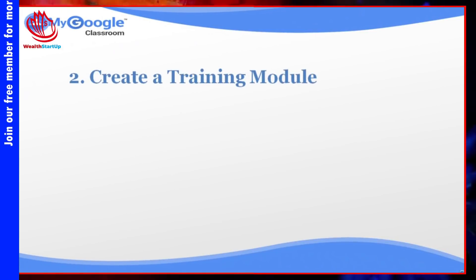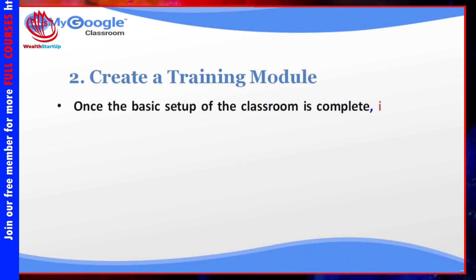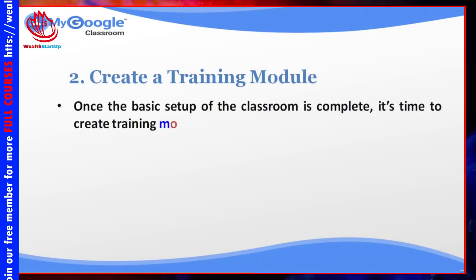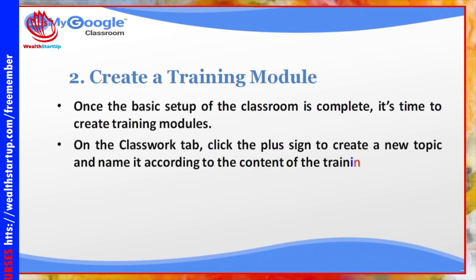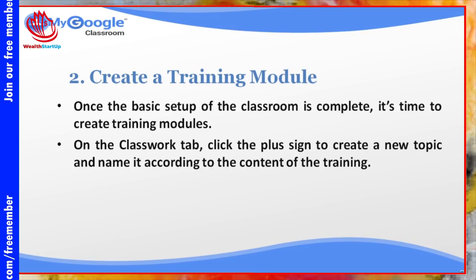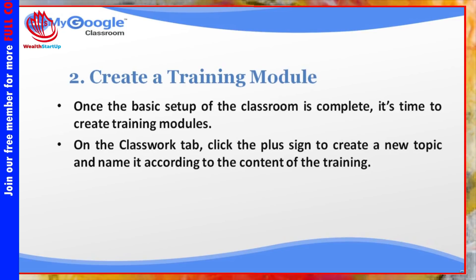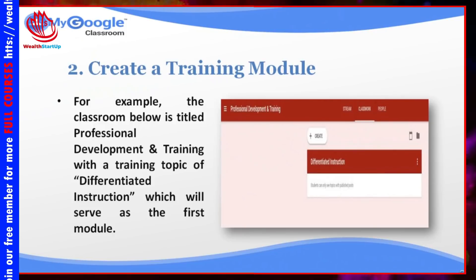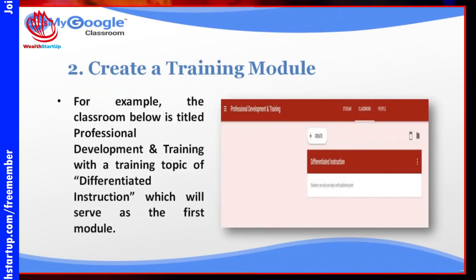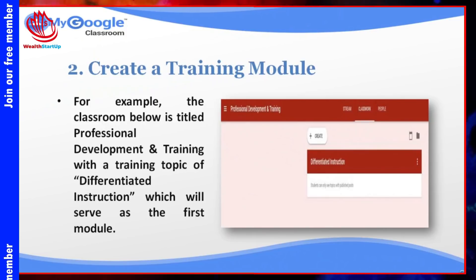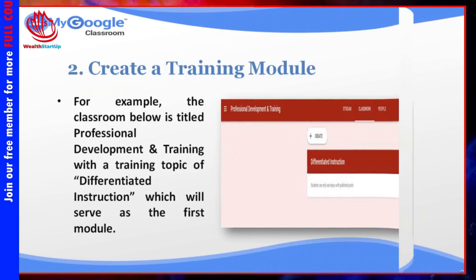Number 2: Create a training module. Once the basic setup of the classroom is complete, it's time to create training modules. In the Classroom tab, click the plus sign to create a new topic and name it according to the content of the training. For example, the classroom below is titled Professional Development and Training, with a training topic of differentiated instruction, which will serve as the first module.